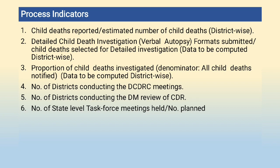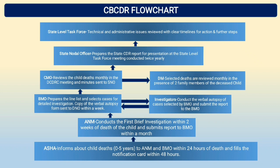Process indicators include: child deaths reported by estimated number of child deaths district-wise; detailed child death investigation — verbal autopsy formats submitted; child deaths selected for detailed investigation, data computed district-wise; proportion of child deaths investigated; number of districts conducting DCDRC meetings; number of districts conducting DM review of CDR; and number of state level task force meetings held.